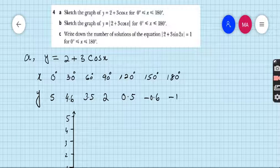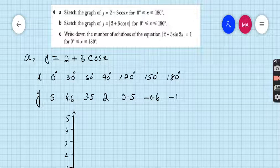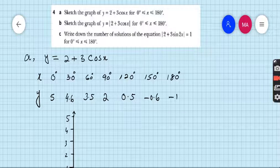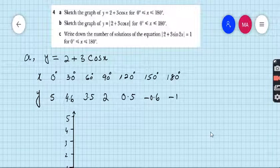You can also make the table by x and y values and you can take another interval as well. Now for x: 0, 30, 60, 90, 120, 150, 180. With the help of calculator you can find 2 plus 3 cos 0, you will get 5. 2 plus 3 cos 30, you will get 4.6, and so on. Finally, 2 plus 3 cos 180, you will get minus 1.